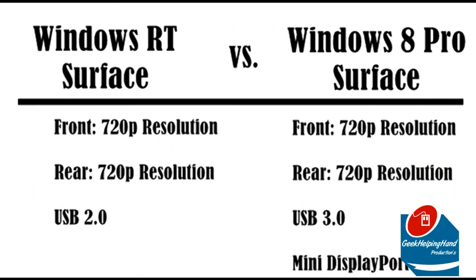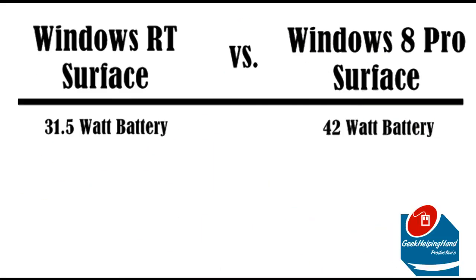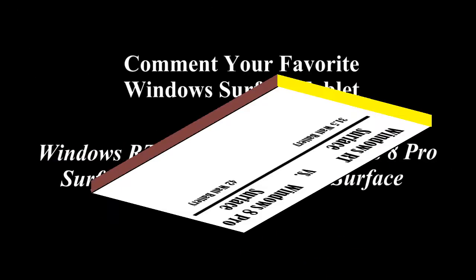Both versions provide the same front and rear-facing cameras. The ports follow suit except that Windows 8 Pro provides USB 3.0 instead of USB 2.0, plus a mini DisplayPort. Windows RT provides a 31.5 watt battery and Windows 8 Pro provides a 42 watt battery, so you're going to get more hours with Windows 8 Pro than Windows RT.